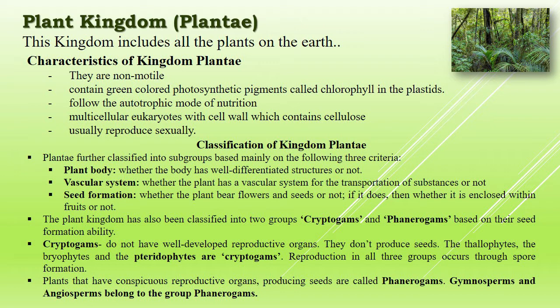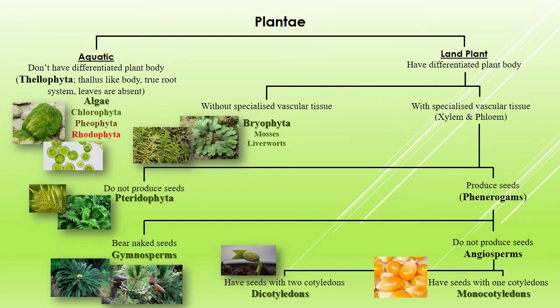The cyanobacteria, also referred to as blue-green algae, are not considered algae anymore. Whittaker proposed the five kingdom classification in the year 1969, which is widely accepted by most scientists all over the world. According to Whittaker's classification, the plant kingdom contains five groups: algae, bryophyta, pteridophyta, gymnosperms, and angiosperms.